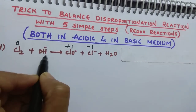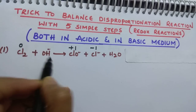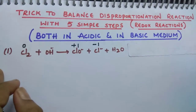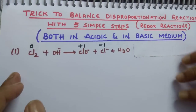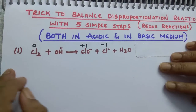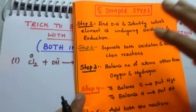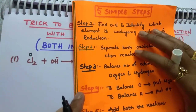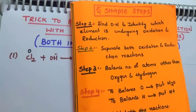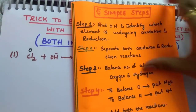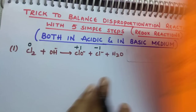Now I will show you how to do it. The example is Cl₂ plus OH⁻. Here I am taking basic medium, but I will first show you the acidic medium steps, then convert to basic medium in this same session.